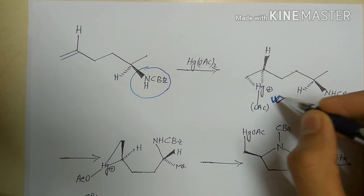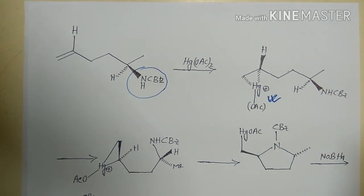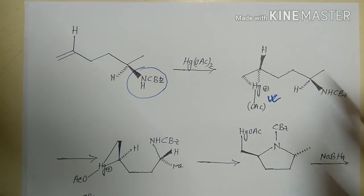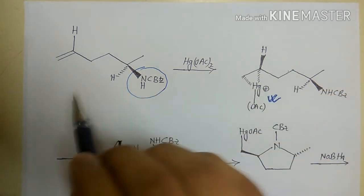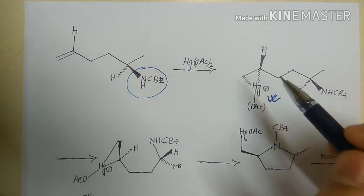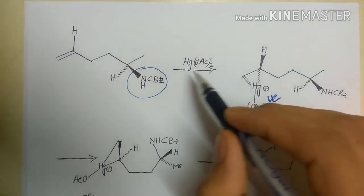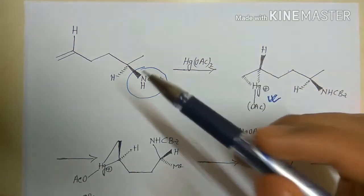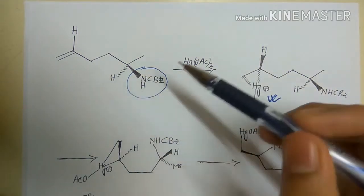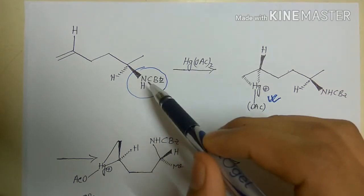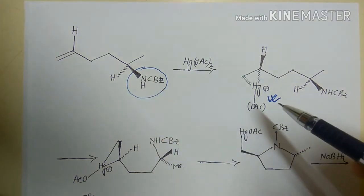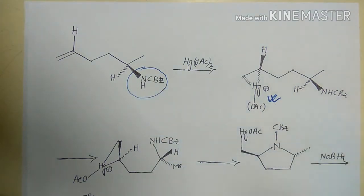This step is very important — you have to consider from which face the mercury attacks. It can attack from above or below the plane, but due to the presence of the bulky NHCBz group, it attacks from the below face, generating the mercurinium cation on that face.